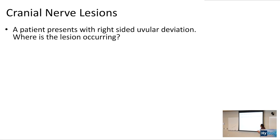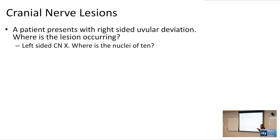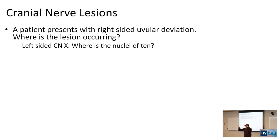The cranial nerve is going to be 10, and CN 10 supports the palate. So it is the left CN 10. The palate keeps the uvula in the midline — look at your left hand — if you have a left cranial nerve 10 palsy, the palate gets weak there, falls, and the uvula deviates to the right side.